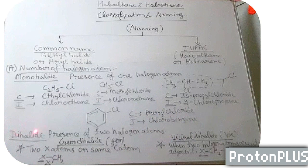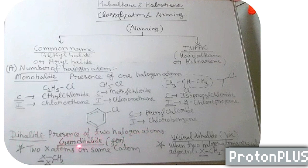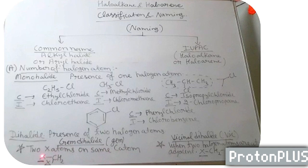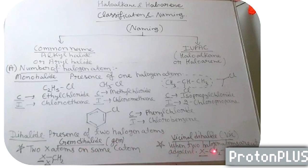Now we will take dihalides — the presence of 2 halogen atoms, that is dihalide. Dihalides are of 2 types. First, gem dihalide (abbreviation: gem), and vicinal dihalide (abbreviation: vic). Gem dihalide is when 2 halogen atoms are on the same carbon atom. When 2 halogen atoms are adjacent to each other, that is in nearby positions, it is named as vicinal dihalide.